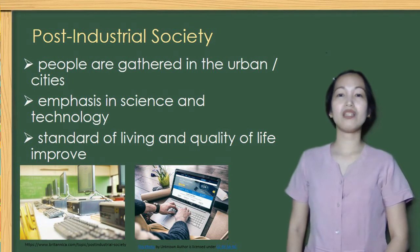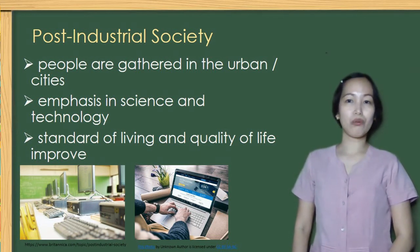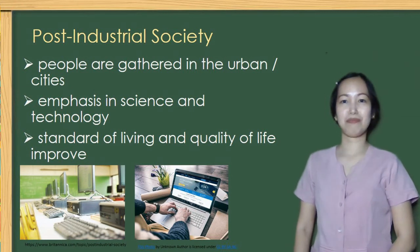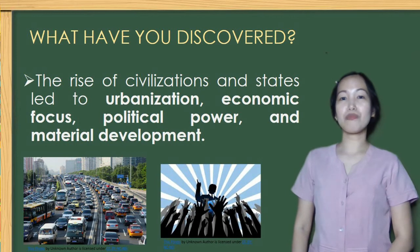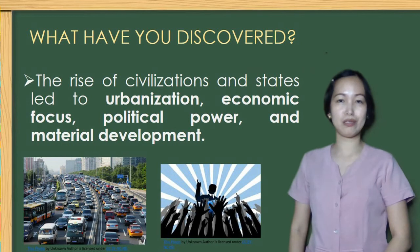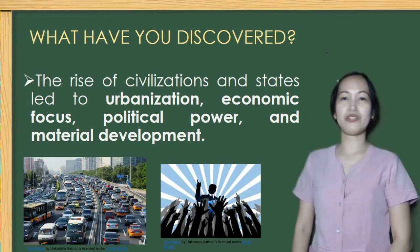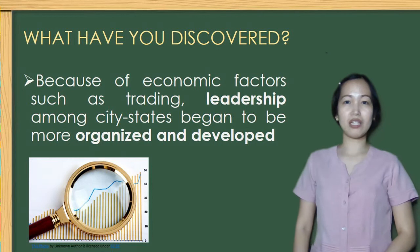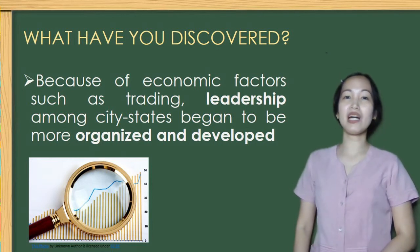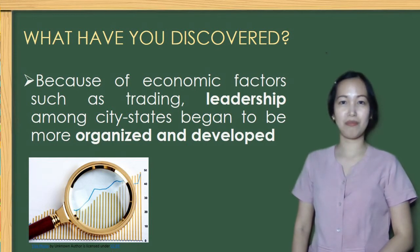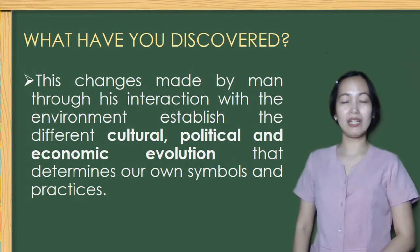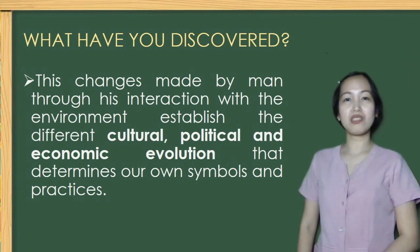Culture — such as beliefs, knowledge, customs, skills, attitudes, and languages — changes over time as humans also evolved to adapt to the emerging needs of society. These are some of the implications of social, cultural, political, and economic evolution of humans. The rise of civilization and states led to urbanization, economic focus, political power, and material development. Because of economic factors such as trading, leadership among city-states began to be more organized and developed. These changes made by man through his interaction with the environment established the different cultural, political, and economic evolution that determines our own symbols and practices.